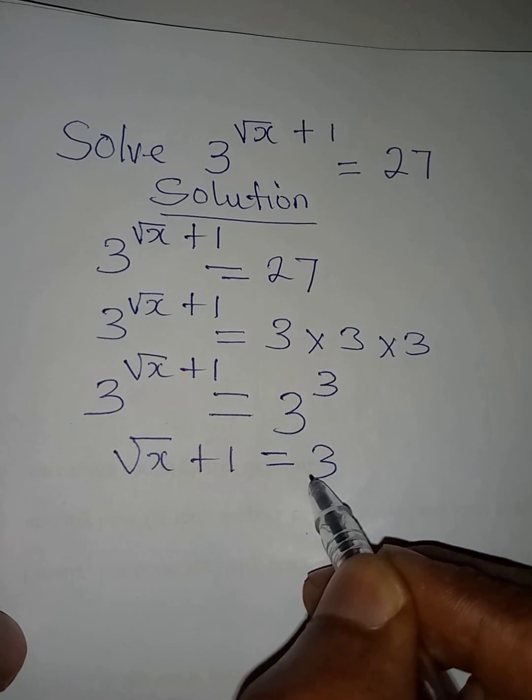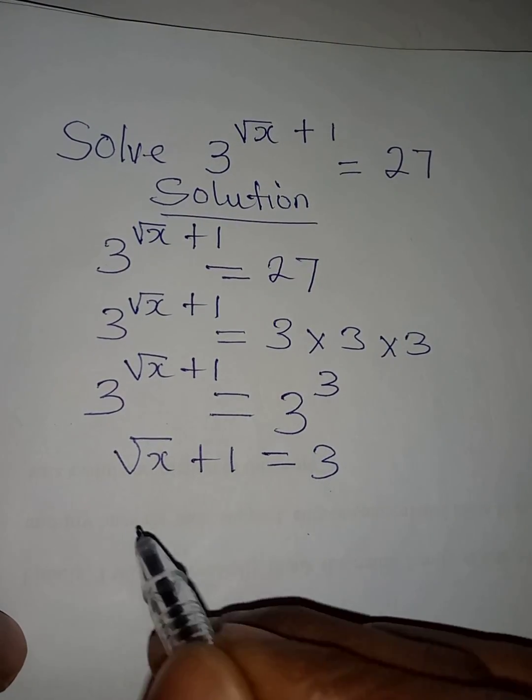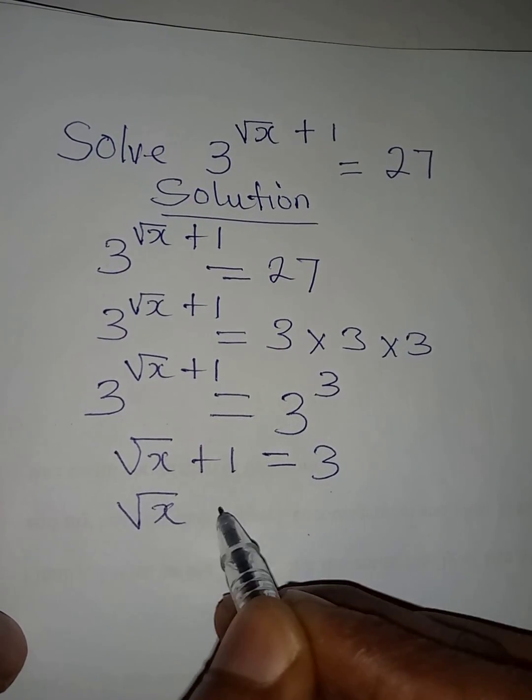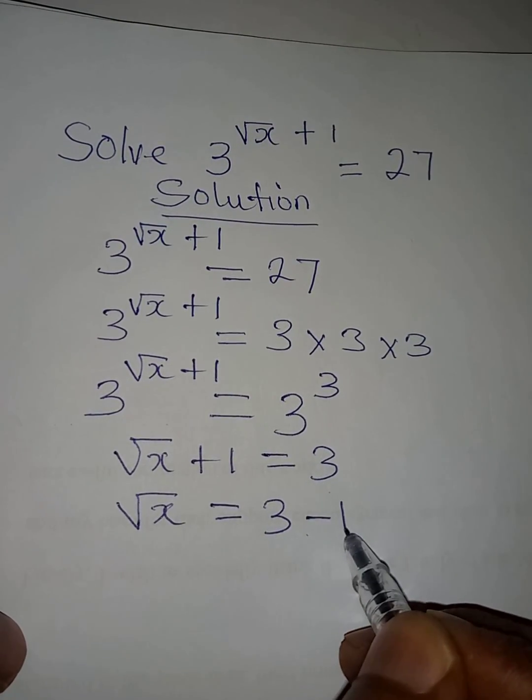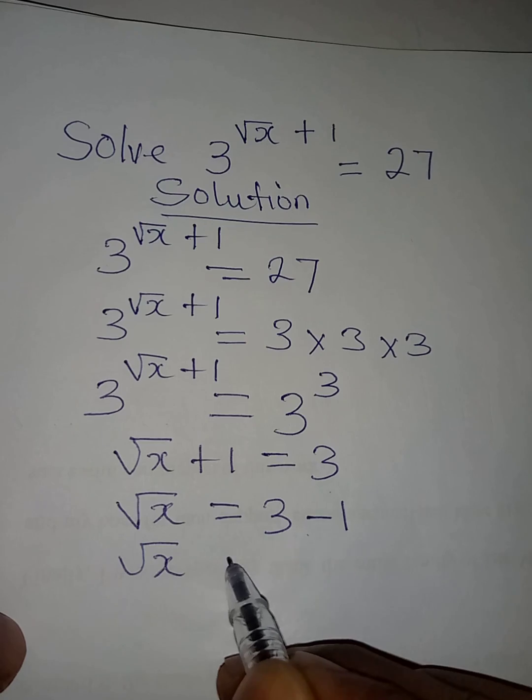So square root of x plus 1 is equal to 3. I'm going to collect like terms so that square root of x will now be equal to 3 minus 1. Then square root of x is equal to 2.